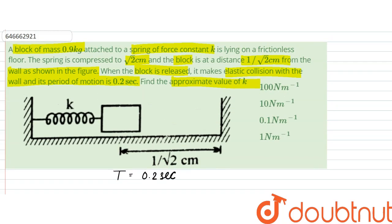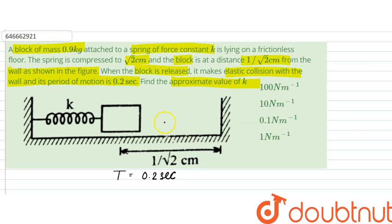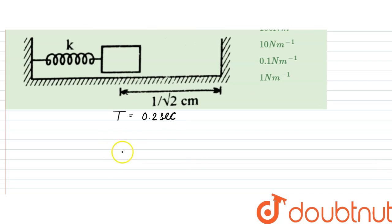And the collision time would be less than this time period. The period of free oscillation, if the wall was not there, would be root 2 cm. But it would be 1 by root 2, since 1 by root 2 is less than root 2.